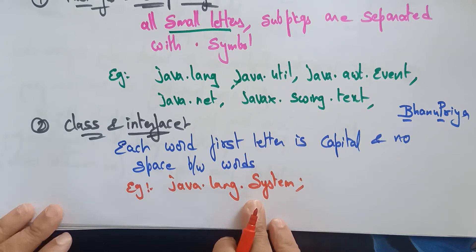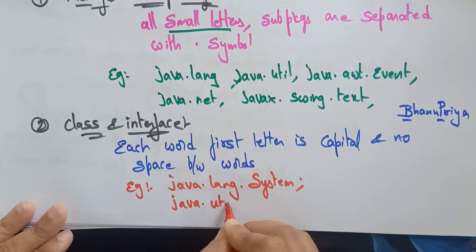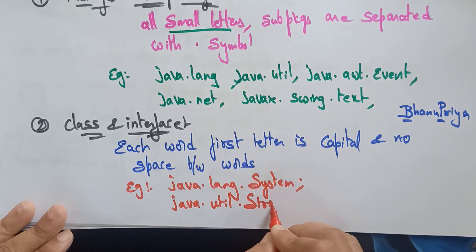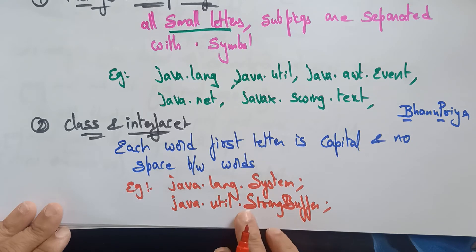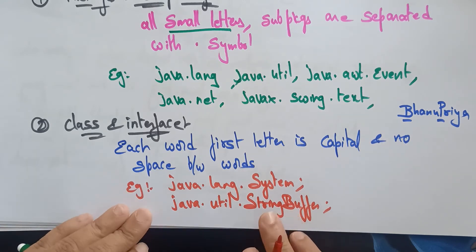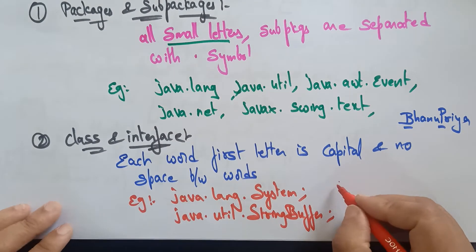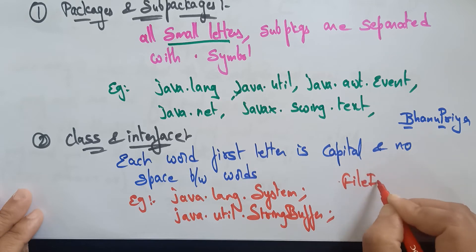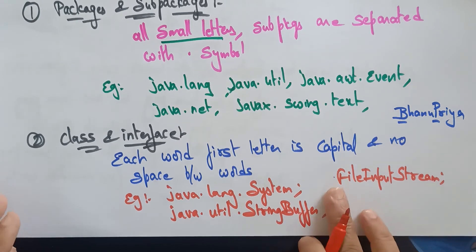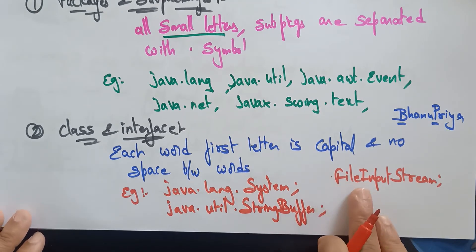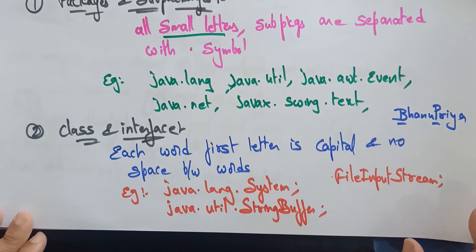For example: java.util.String — 'S' is a capital letter. StringBuffer — 'S' is capital and 'B' is capital, with no space between the two words. This is a class or interface. Another example is FileInputStream — 'F', 'I', and 'S' are all capital letters, each being the first letter of each word with no space in between. This is how you identify a class or interface.